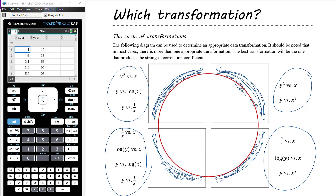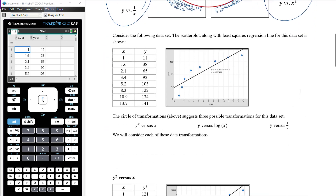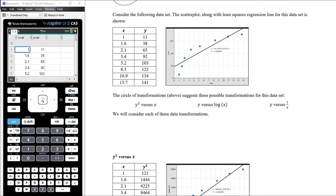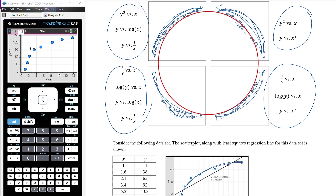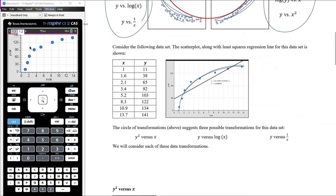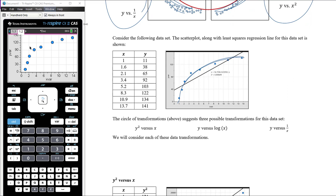Let's work through an example that's been worked for you in your notes, then we'll look at one ourselves. I've got the data entered into my CAS. On the data and statistics page, looking at the scatter plot of x versus y, we can see the data curves in the top-left direction. Going back to our circle of transformations, that means we're interested in one of three transformations: the squared transformation to the y variable, log transformation to the x variable, or reciprocal transformation to the x variable.